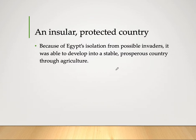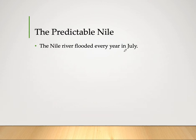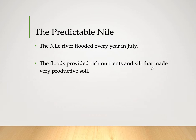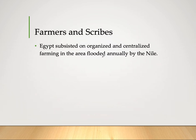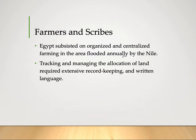Egypt flourished through agriculture because the Nile River flooded predictably every year in July. The floods provided rich nutrients and silt that made the soil very productive. Farmers and scribes flourished here. Egypt subsisted on organized and centralized farming in the area flooded annually by the Nile. Tracking and managing the allocation of land required extensive record keeping and written language — those were the main purposes of farmers and scribes.